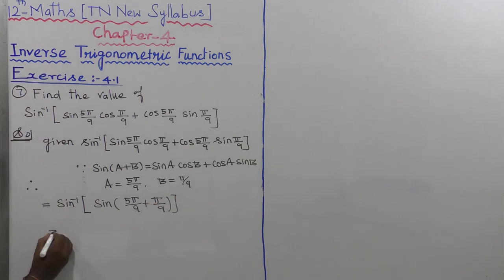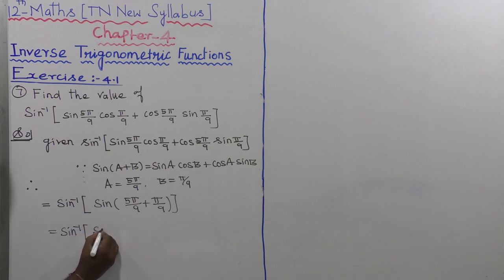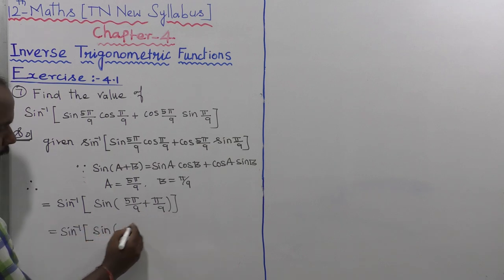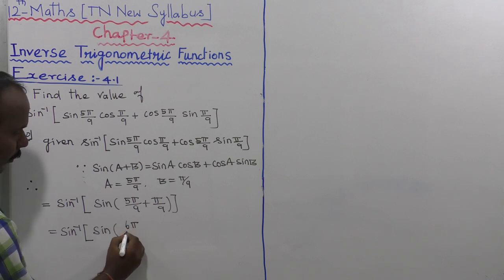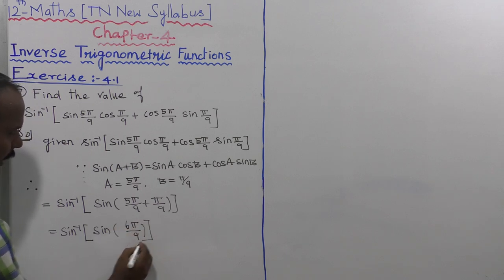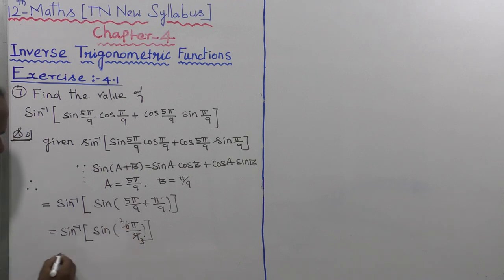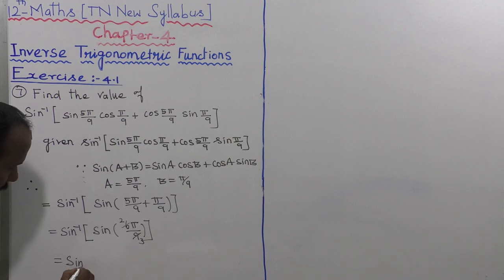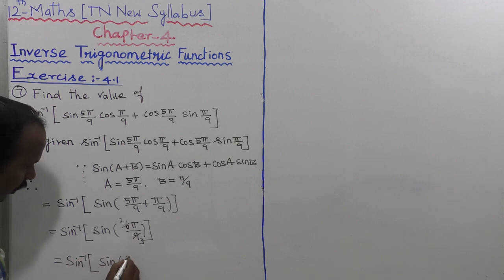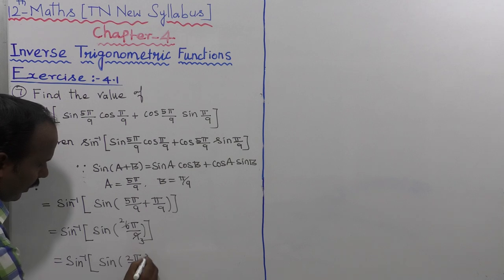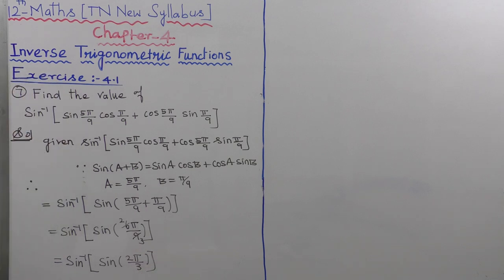This equals sin inverse of sin(6π/9), since the denominator is common. Simplifying, 6π/9 reduces to 2π/3, so we have sin inverse of sin(2π/3).